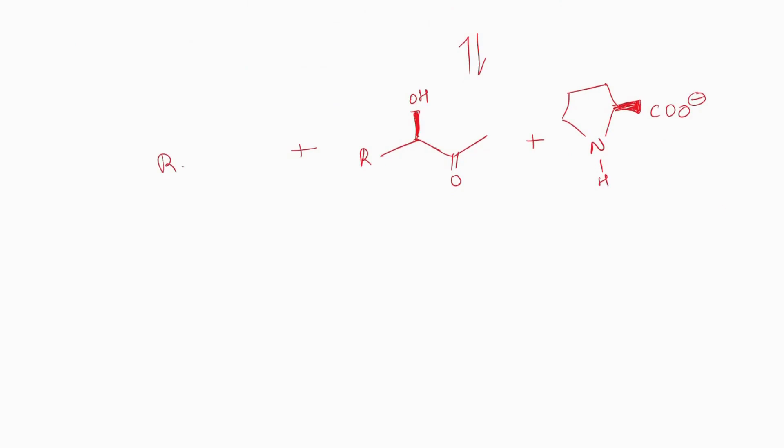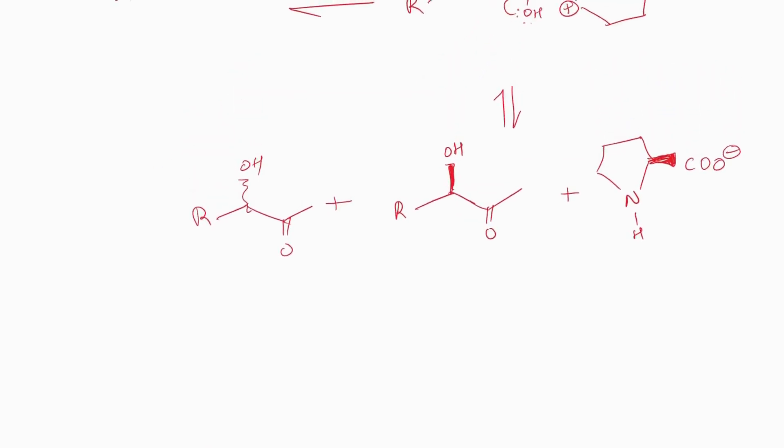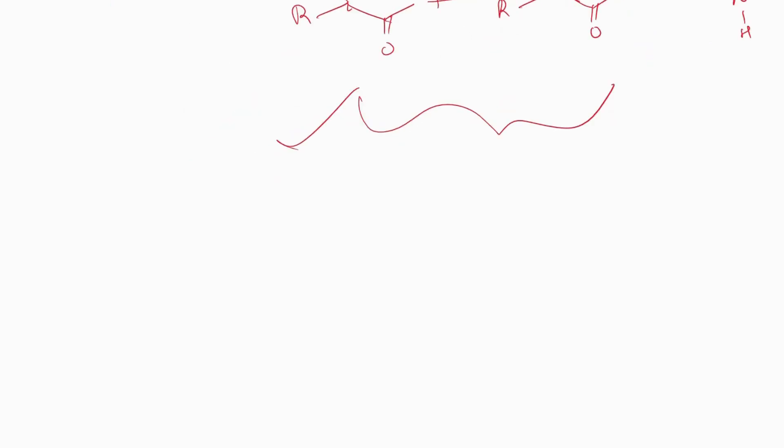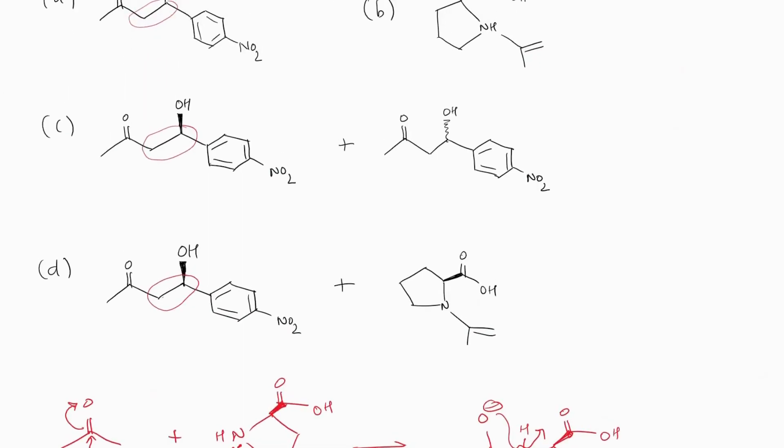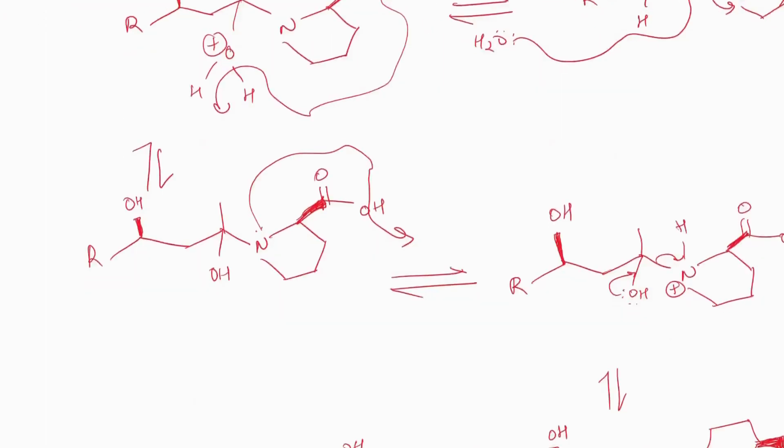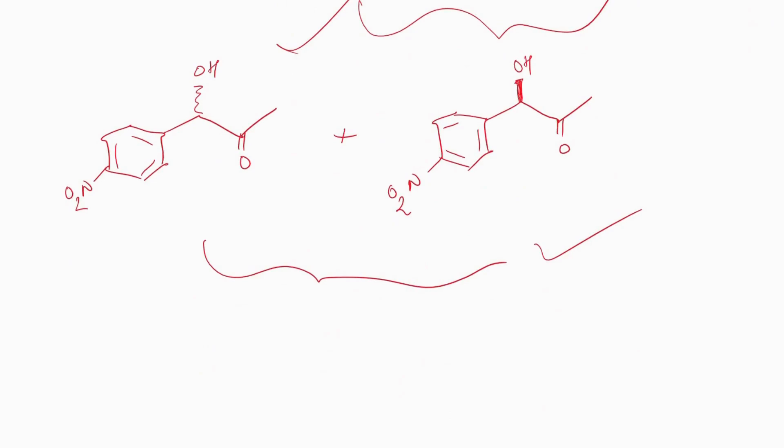Also second enantiomer is formed which is from dash side. So this is the final product. This R group is something like this, so final product is something like this plus this one, and the answer is option C. The right answer is option C. So this is how we can approach questions from its options.